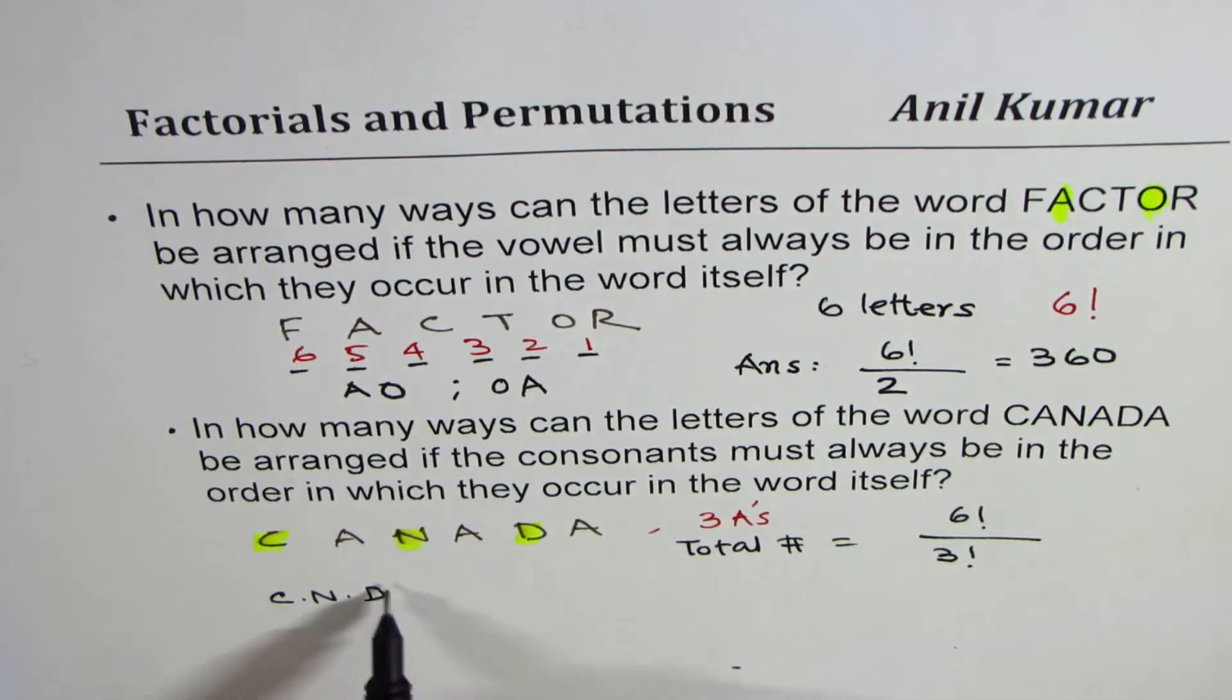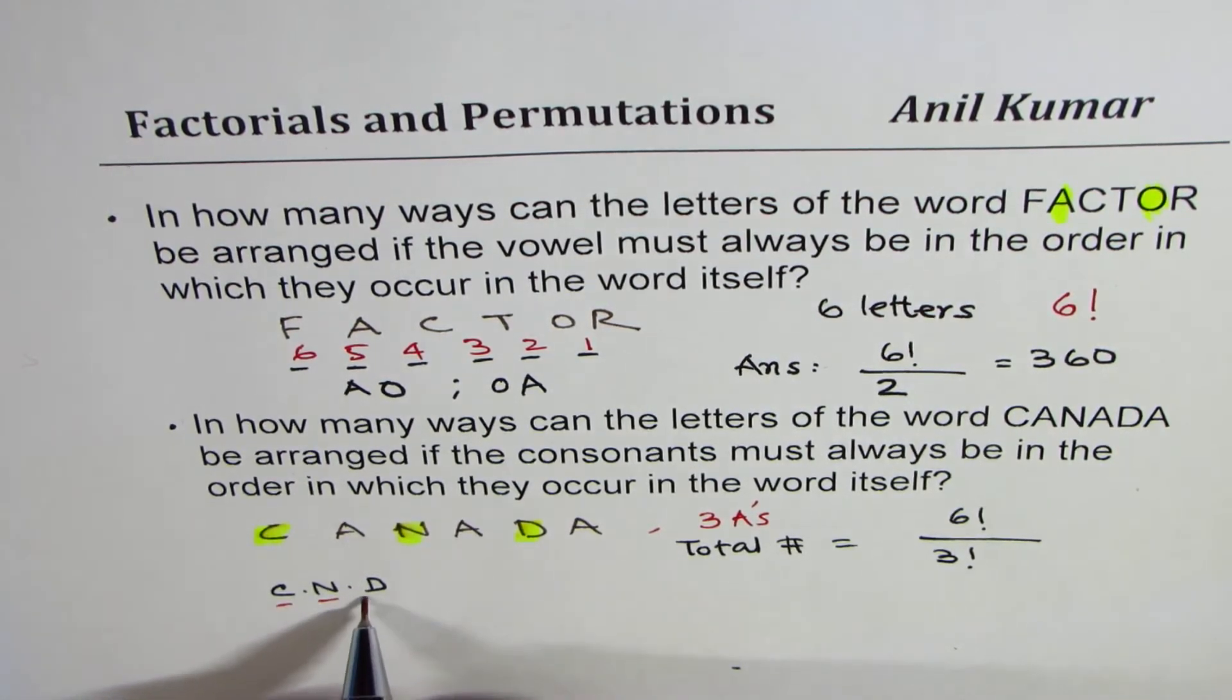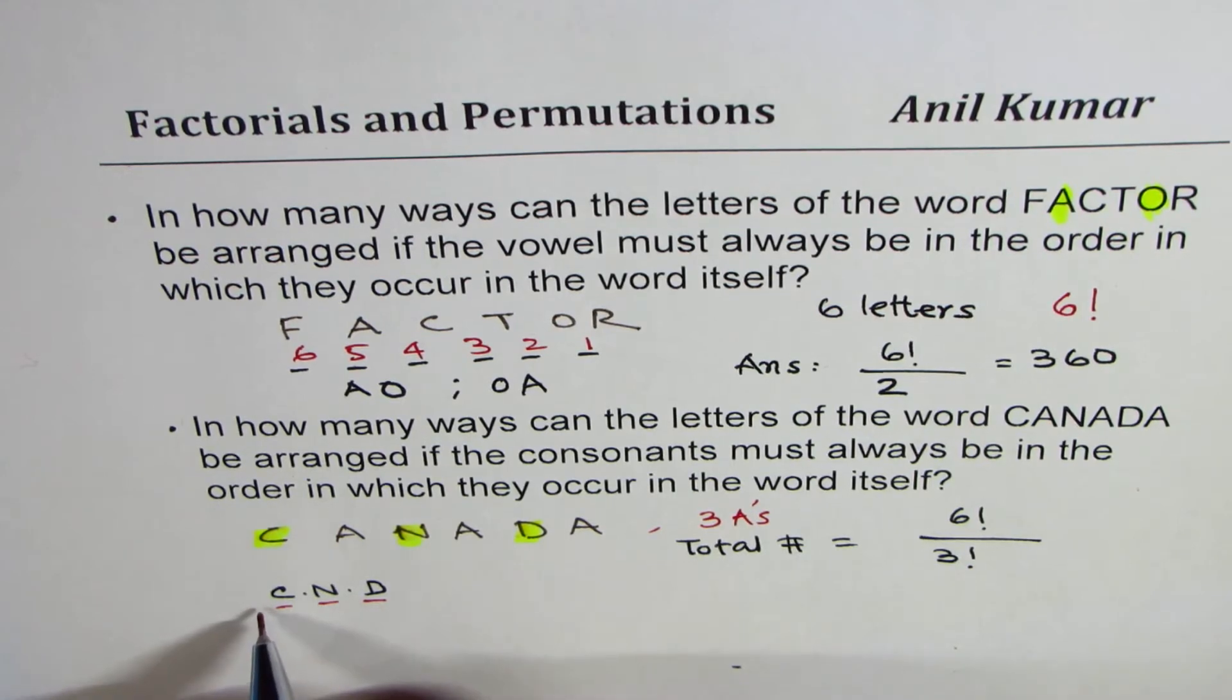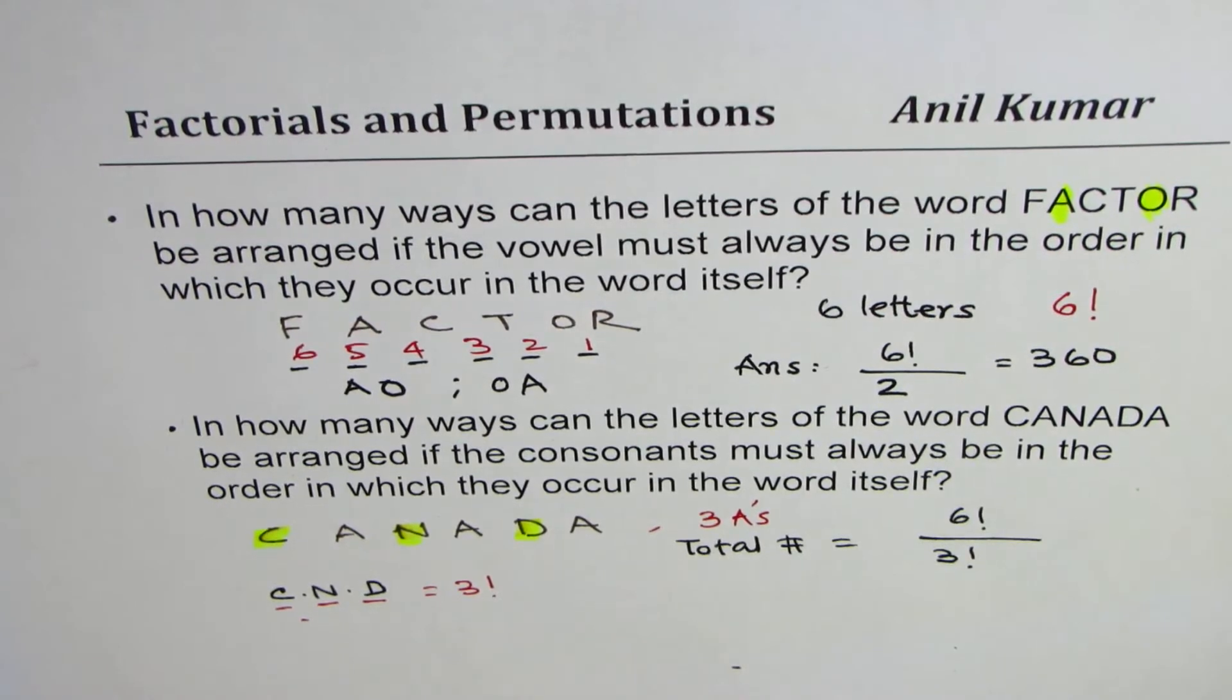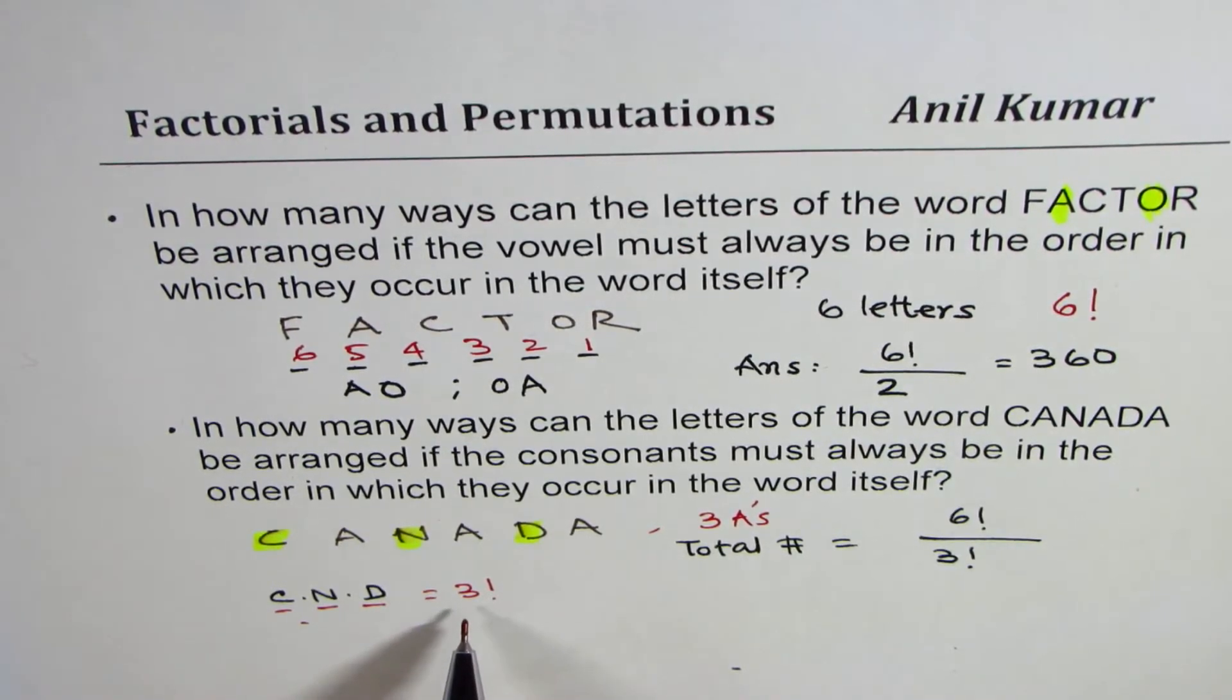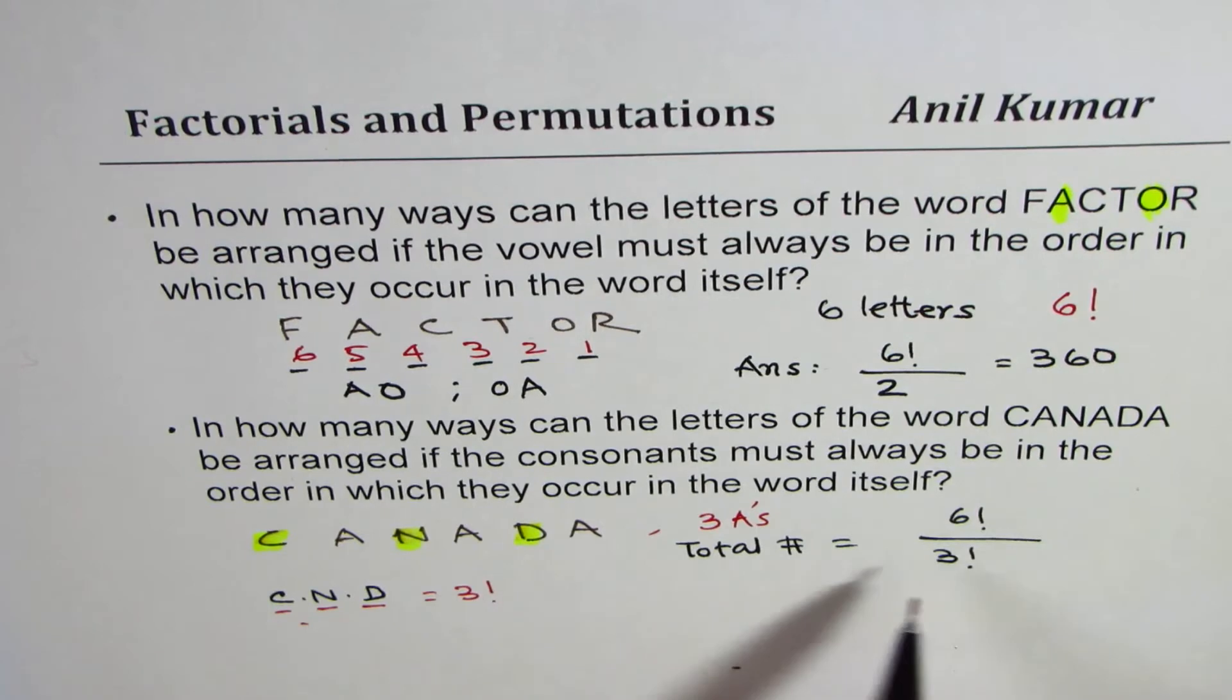Now, how many words can you make with C, N, D? That is what you have to figure out. With C, N, D, you could have C first, N later followed by D. Then you can have N first. So basically, these will give you 3 factorial ways. Only one of them will have C, N, D in the order which we have. All will be same. All these will be divided by 3 factorial.